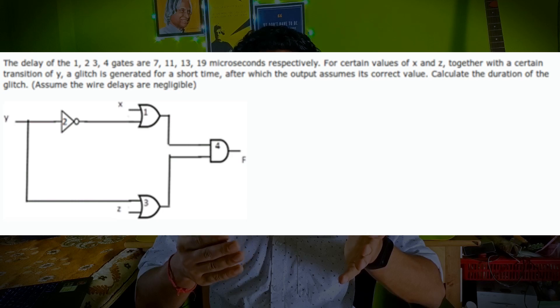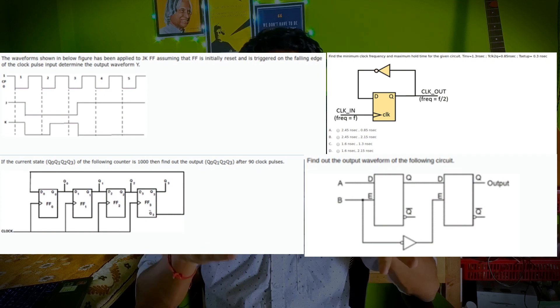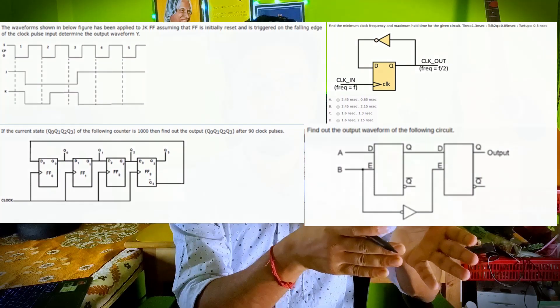In the digital portion, companies tend to ask questions slightly beyond B.Tech level, but don't worry — I'll tell you where to prepare. Sample questions include timing calculation questions (which you can answer if you've studied VLSI), and flip-flop questions are a must-cover topic. Out of 20 digital questions, four to five may be from flip-flops alone, so revise flip-flops thoroughly.